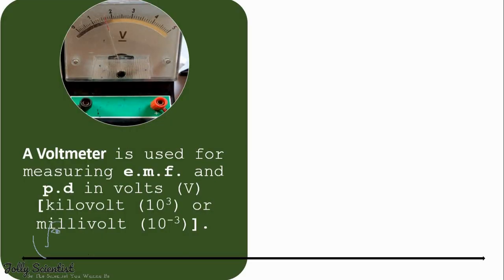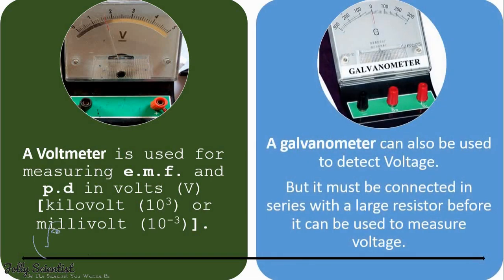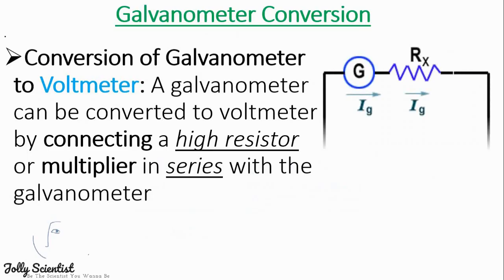Its unit is voltage. A voltmeter is used for measuring EMFs and PD. A galvanometer can also be used to detect voltage. To convert a galvanometer to a voltmeter, a galvanometer must be connected in series with a multiplier or high resistor.